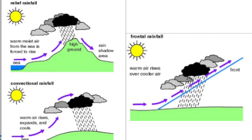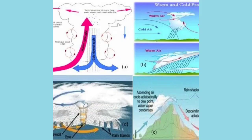Rainfall can be mainly of three types. On the basis of origin, it can be identified as convectional rainfall, orographic rainfall — which is also called relief rainfall — and cyclonic rainfall or frontal rainfall.